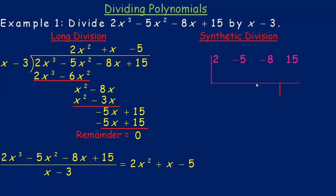Now this is how you do it by what's called synthetic division. This is the synthetic division symbol — it kind of looks like an upside-down long division symbol. The coefficients of 2x cubed minus 5x squared minus 8x plus 15 go across the top: 2, negative 5, negative 8, and 15. We're dividing by x minus 3, and what goes on the left is the restriction on that division. x is not allowed to equal 3, because if x were 3, you'd be dividing by 0, which is undefined. So we put the 3 on the left. Then we just bring down the leading 2.